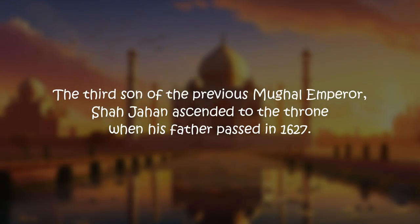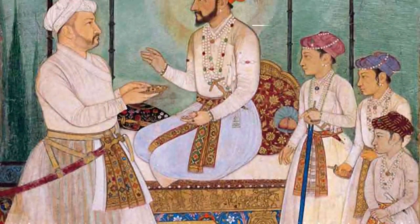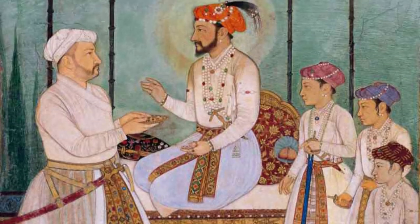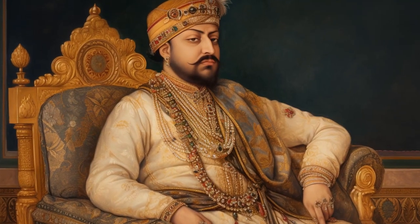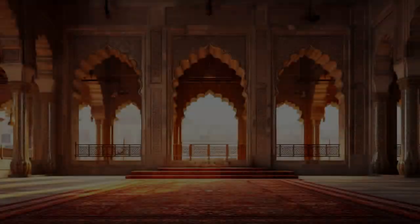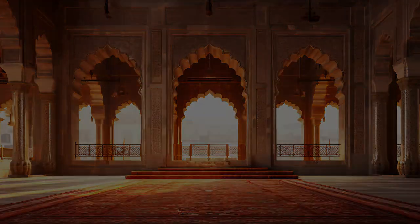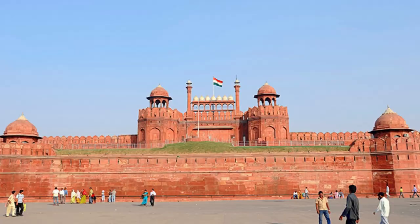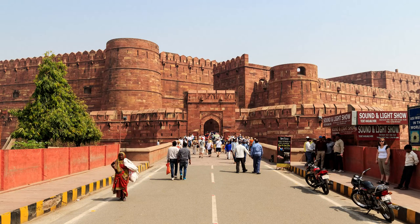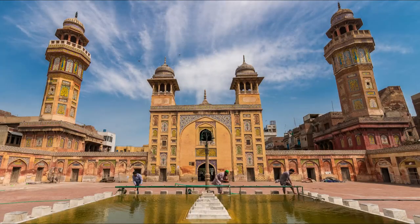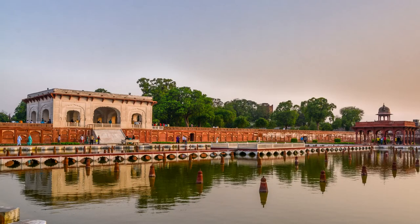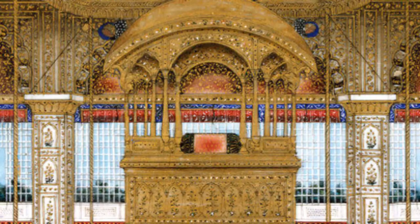The third son of the previous Mughal Emperor, Shah Jahan ascended to the throne when his father passed in 1627. He was an ambitious man and had big plans to make improvements to his domain. Shah Jahan was a major patron of the architectural arts in particular. He pioneered many construction projects such as the Red Fort or Delhi Fort, large sections of Agra Fort, the Jama Masjid, the Wazir Khan Mosque, the Shalimar Gardens, and even the Peacock Throne made to celebrate his rule.